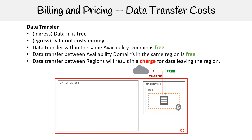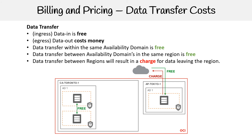Now imagine we have another region, and in this region we have an availability domain — a data center — with two servers, maybe in different fault domains or different subnets. The point is they're in the same data center, so any data transfer between them is going to be free. If we have another availability domain in that same region and want to transfer data between those two, that's also going to be free because they're all in the same region.